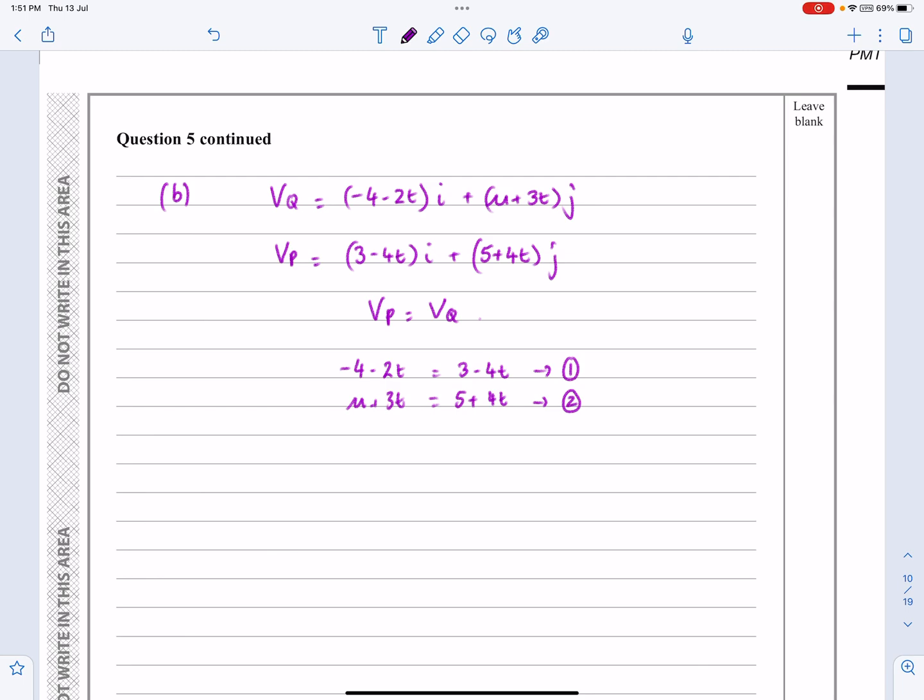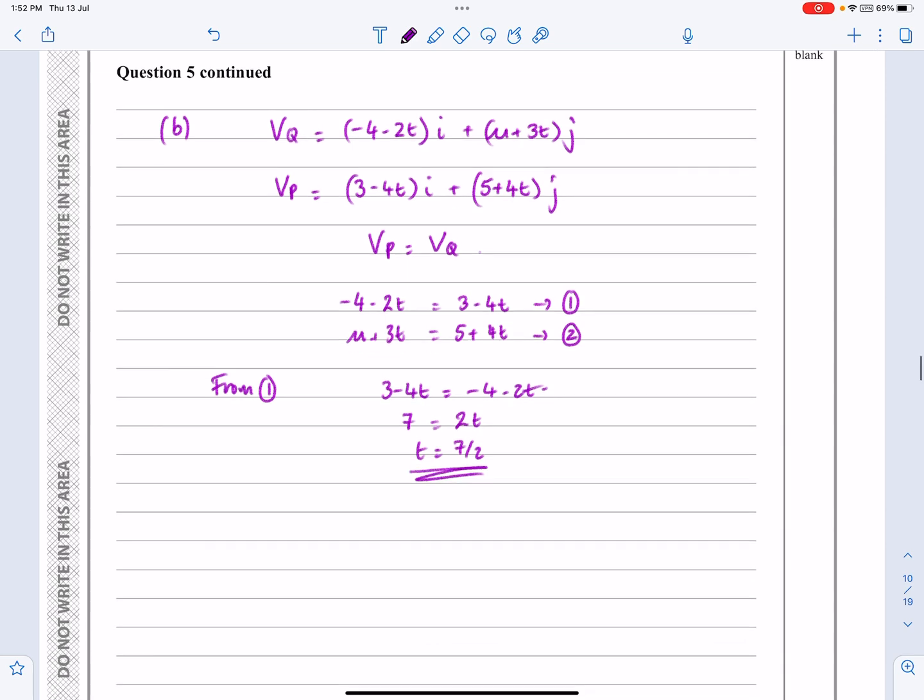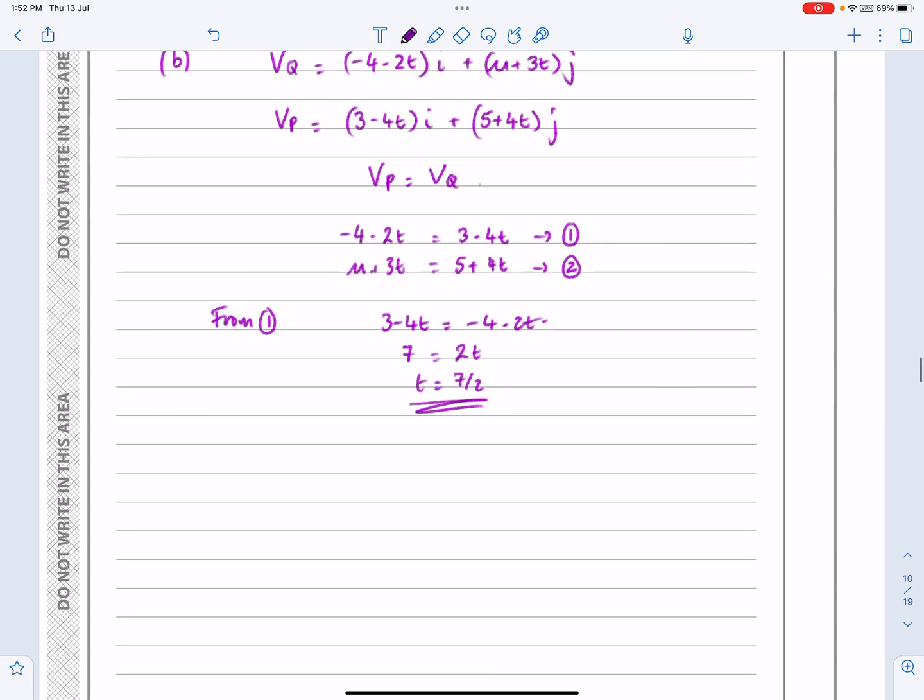So I get minus 4 minus 2T is equal to 3 minus 4T. If I compare the J's I'm going to get mu plus 3T is going to be equal to 5 plus 4T. And if I call that equation number 1 and I call that equation number 2, looking at equation number 1 I can actually work out what T is going to be. From number 1, 3 minus 4T is equal to minus 4 minus 2T so I'm going to get 7 is equal to 2T. So T is equal to 7 over 2.